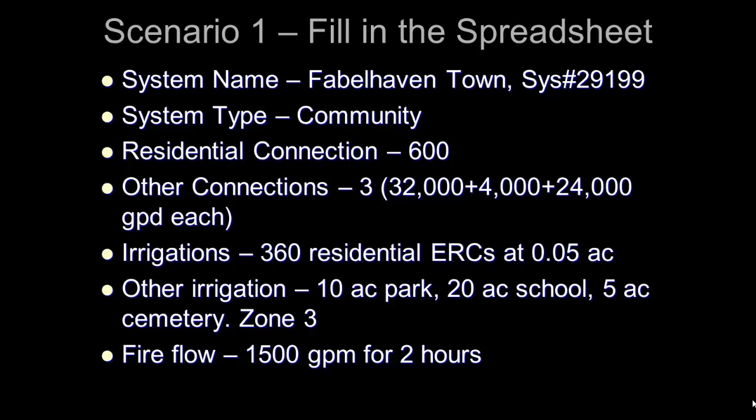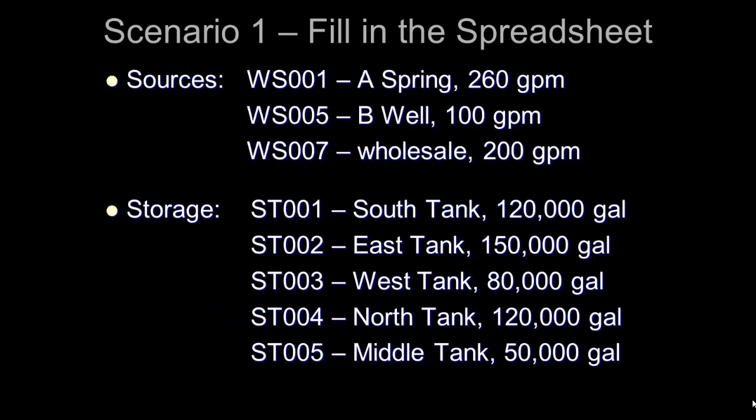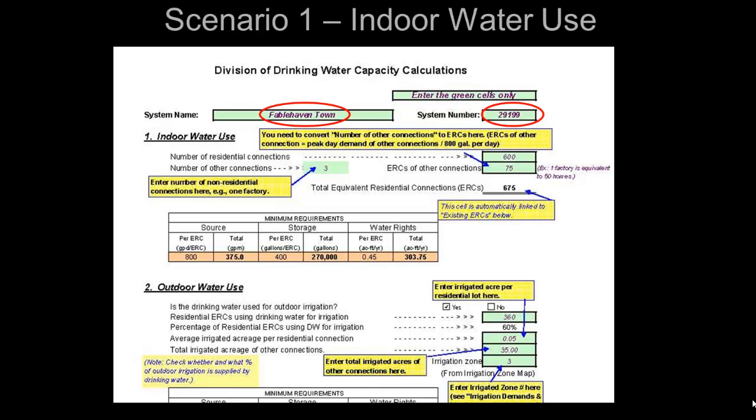The three other connections use 32,000, 4,000, and 24,000 gallons per day respectively. For irrigation, 360 of the 600 connections use drinking water for irrigation purposes, with an average of 0.05 acres being irrigated. Other connections requiring irrigation include a 10-acre park, 20-acre school, and 5-acre cemetery, all of which are in Zone 3. For fire flow, the local fire marshal requested that 1,500 gallons per minute for two hours be provided. This community has three sources with their associated flow rates and five storage tanks with their associated storage volumes.